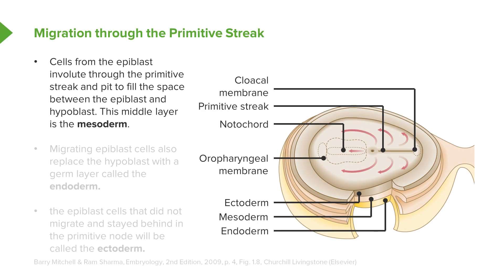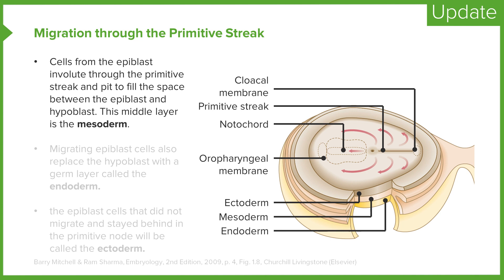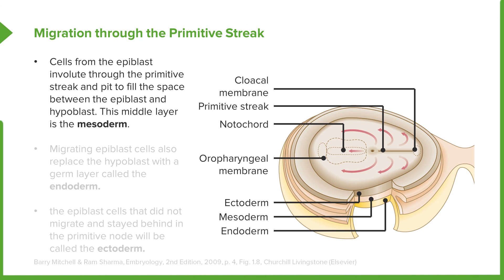As we move further into this process, cells are going to start folding from the epiblast down through the primitive streak and into the space underneath it. These cells replace the hypoblast cells, creating a layer called the endoderm. Subsequent migration through the primitive streak will form a layer in the middle — the mesoderm.